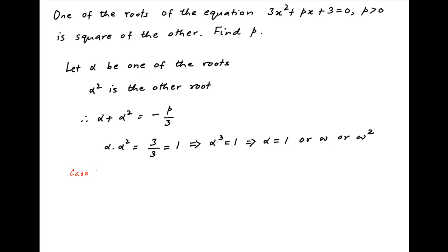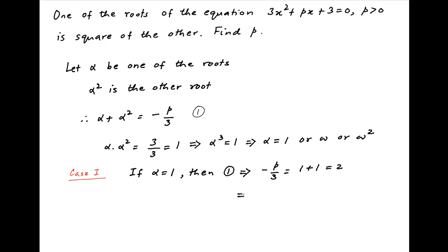Now consider the first case when alpha is equal to 1. In this case, the sum equation becomes minus p upon 3 is equal to 1 plus 1, which is equal to 2, and therefore p is equal to minus 6. But we are given that p is positive, and therefore this solution is ruled out.